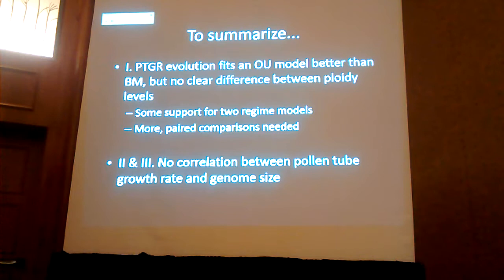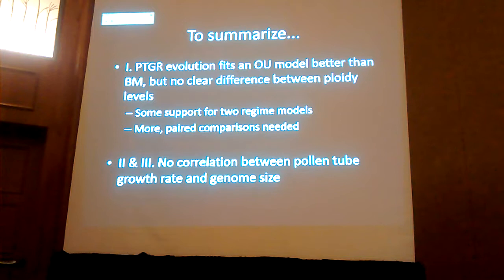There's no clear difference between diploids and polyploids. It should be noted that only about 10% of my species were polyploids, so it's not actually that many comparisons even though the tree has a reasonable number of species. So it would be good to have more direct comparisons. There was also some support for two-optima models, about 35% of the model weight, so that might become clearer with more data.